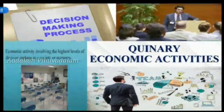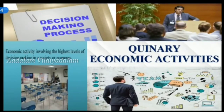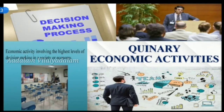Next is quinary economic activities. Quinary economic activities refer to the high-level decision-making process by executives in industries, business, education, and government. This sector includes top executives or officials in the field of science and technology, universities, healthcare, etc. In a house, our parents purchase household articles and make decisions by themselves in some situations. Similarly, the council of ministers takes decisions to introduce various people welfare schemes in the state. This sector is one of the largest sectors of quinary activities.